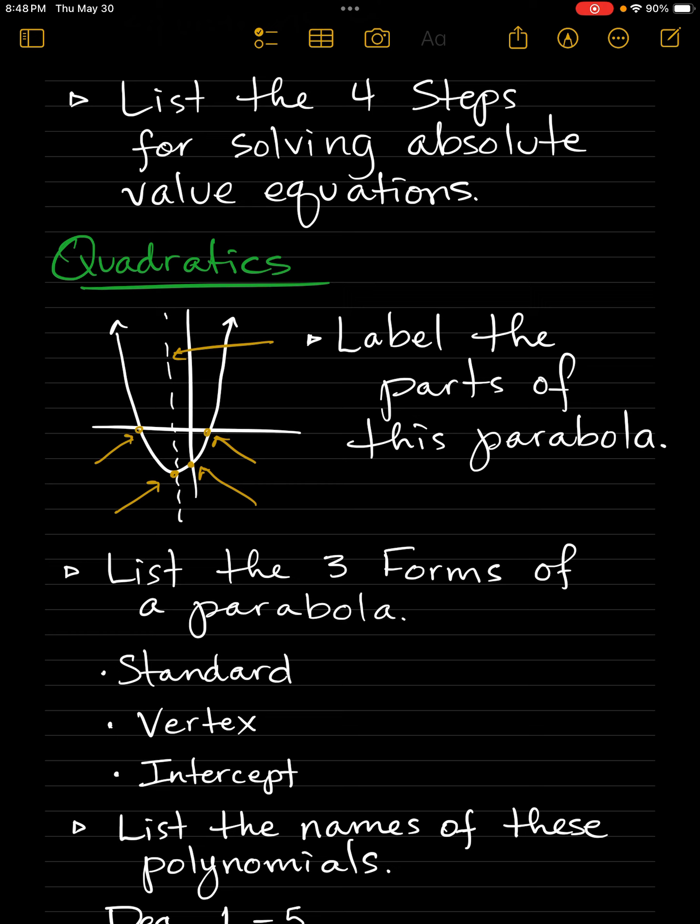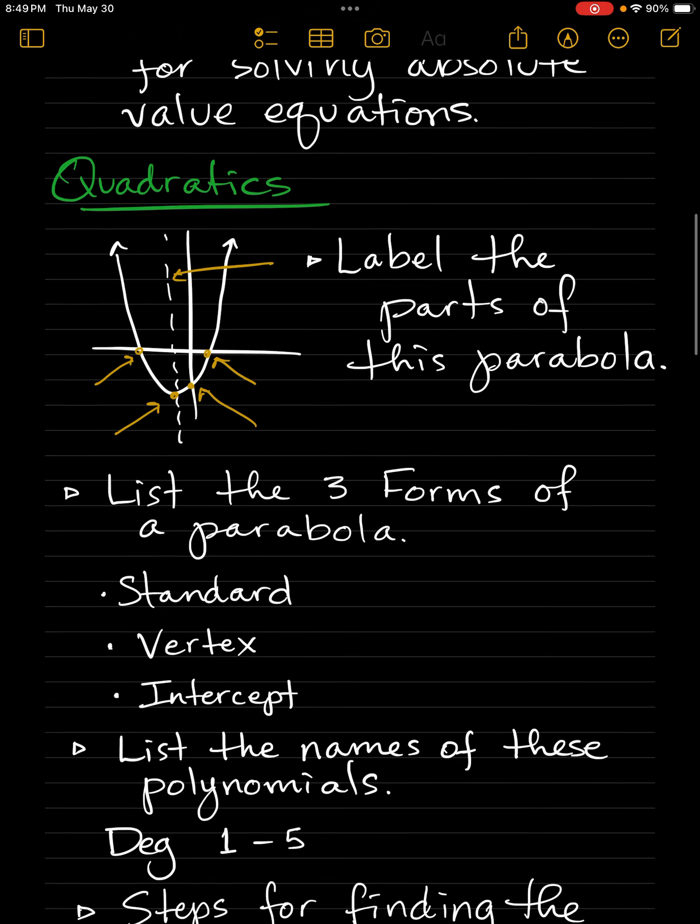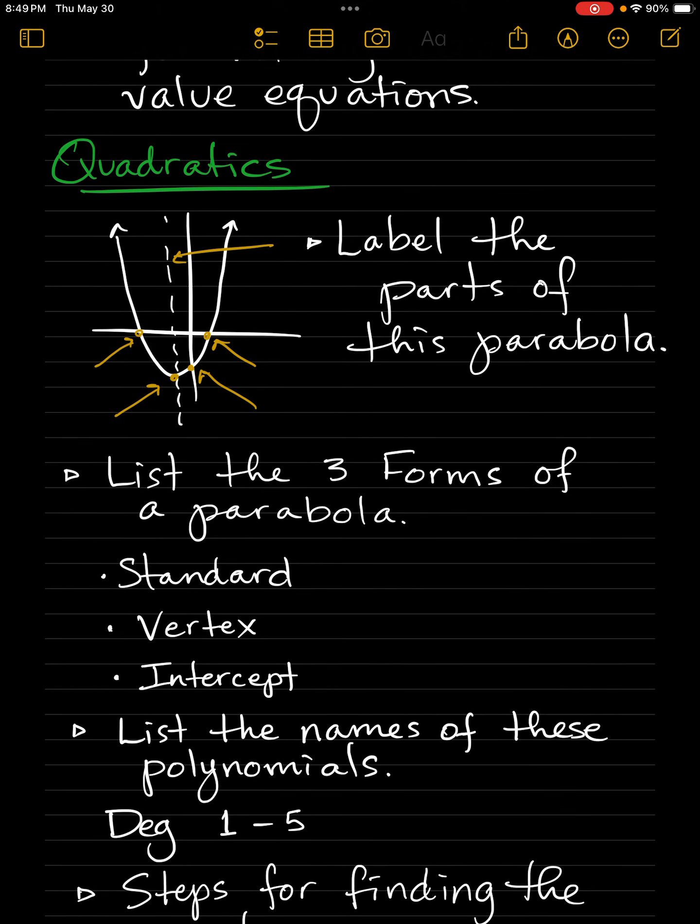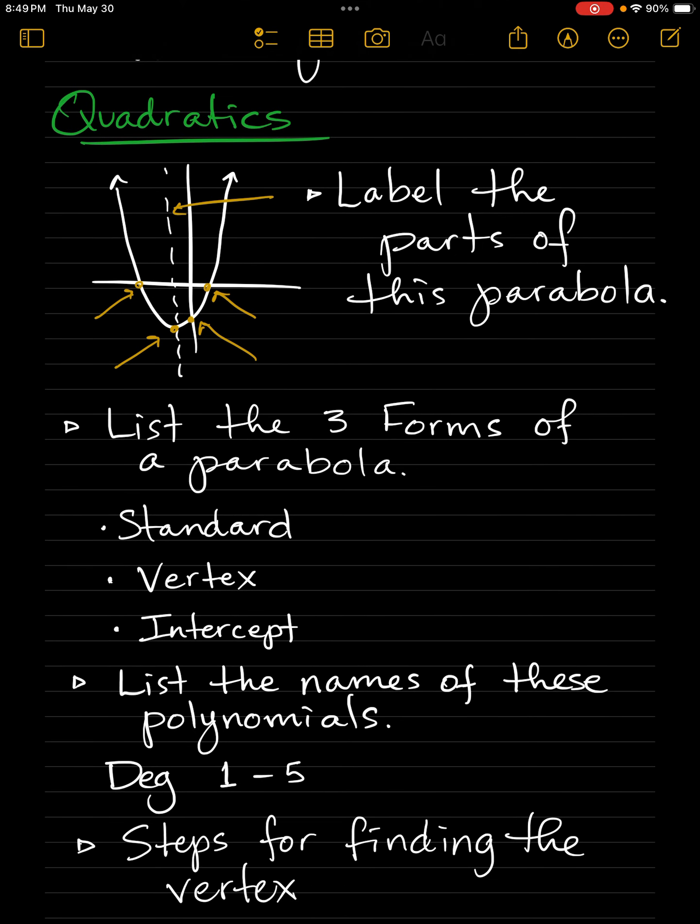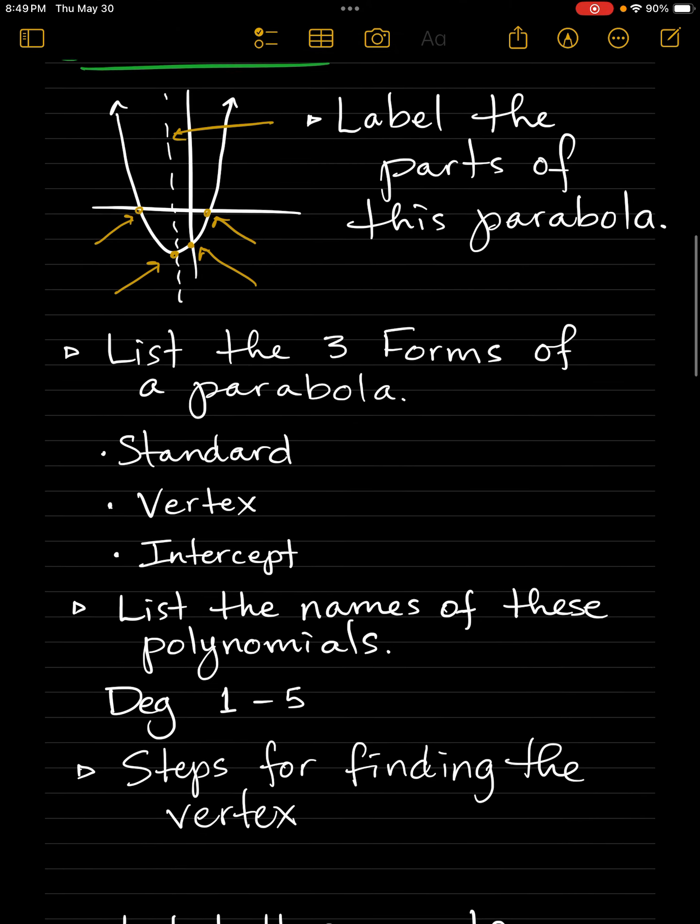Now we're going to look a little bit at quadratics. I'd like you to look at where all the yellow arrows are pointing and see if you can label each aspect of this parabola. List the three forms, and not just list the names, but for example, standard form is y equals ax squared plus bx plus c. Then write the other two forms.